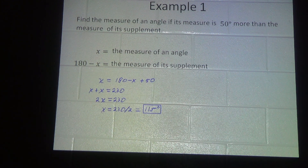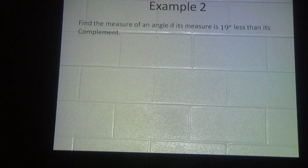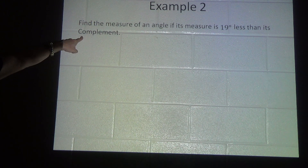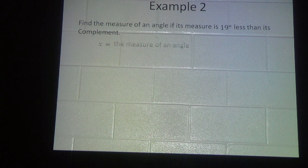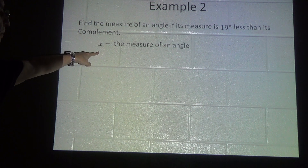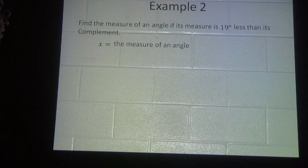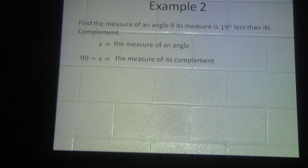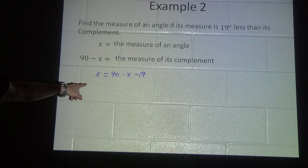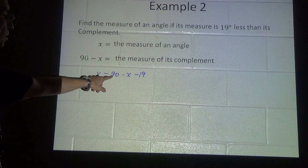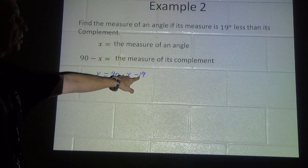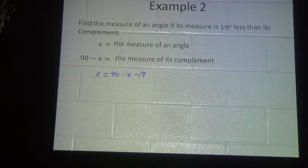Example 2: Find the measure of an angle if its measure is 19 degrees less than its complement. The complement means the two angles together add up to 90. So x is going to equal the angle we're interested in, 90 minus x is the measure of its complement. We set up our equation: x is equal to 90 minus x, which is the complement, minus 19.